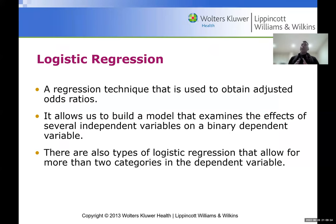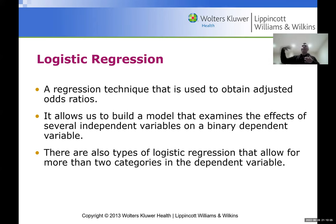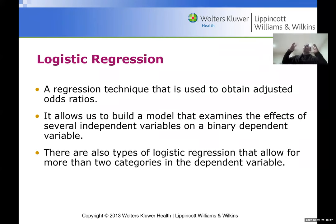Logistic regression is a technique we use to obtain the adjusted odds ratio. You may need to recall what odds ratios are from epidemiology — the OR. This was covered in statistics one. It is an important concept in logistic regression because we are trying to model the outcome, and in order to predict a binary outcome, we need to determine what are the odds of an independent variable becoming the predictor for a binary outcome.